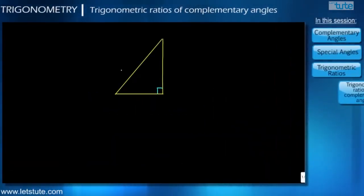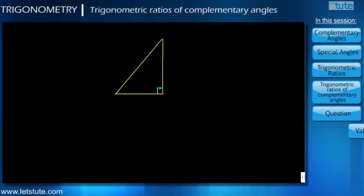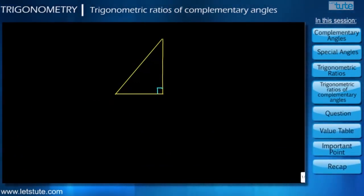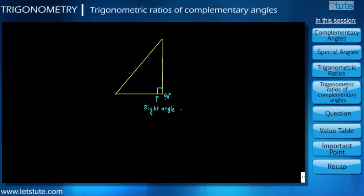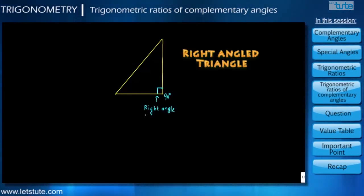Look at this triangle. When we see this sign at the corner, it describes an angle of 90 degrees, which is also known as a right angle. And therefore this triangle is called a right angle triangle.